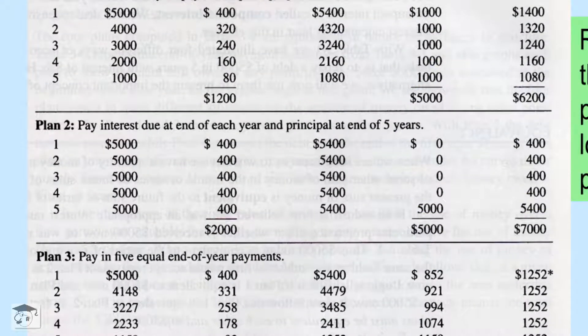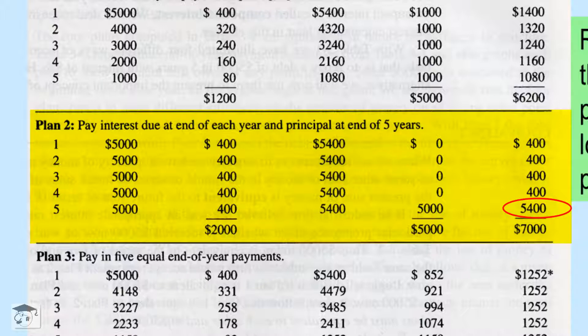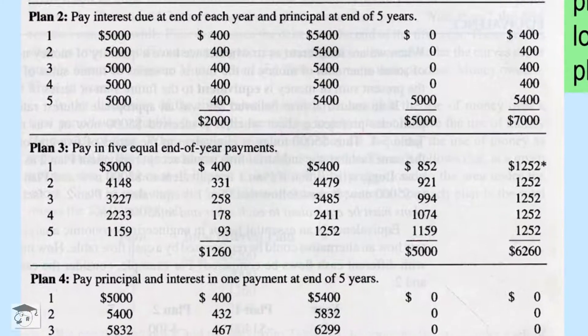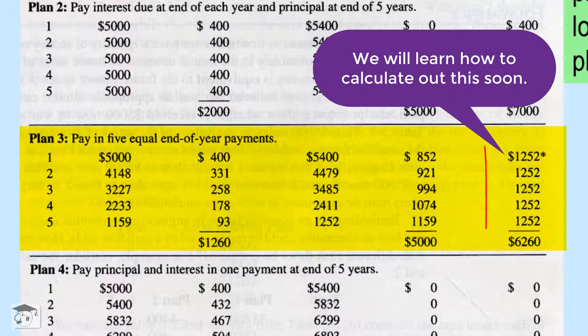The second plan is to pay interest only, so that each year the owed principal is unchanged, until the last payment of $5,400 to close. This is also called balloon payment. The third plan is to pay evenly every year until end of year 5 to become debt free.